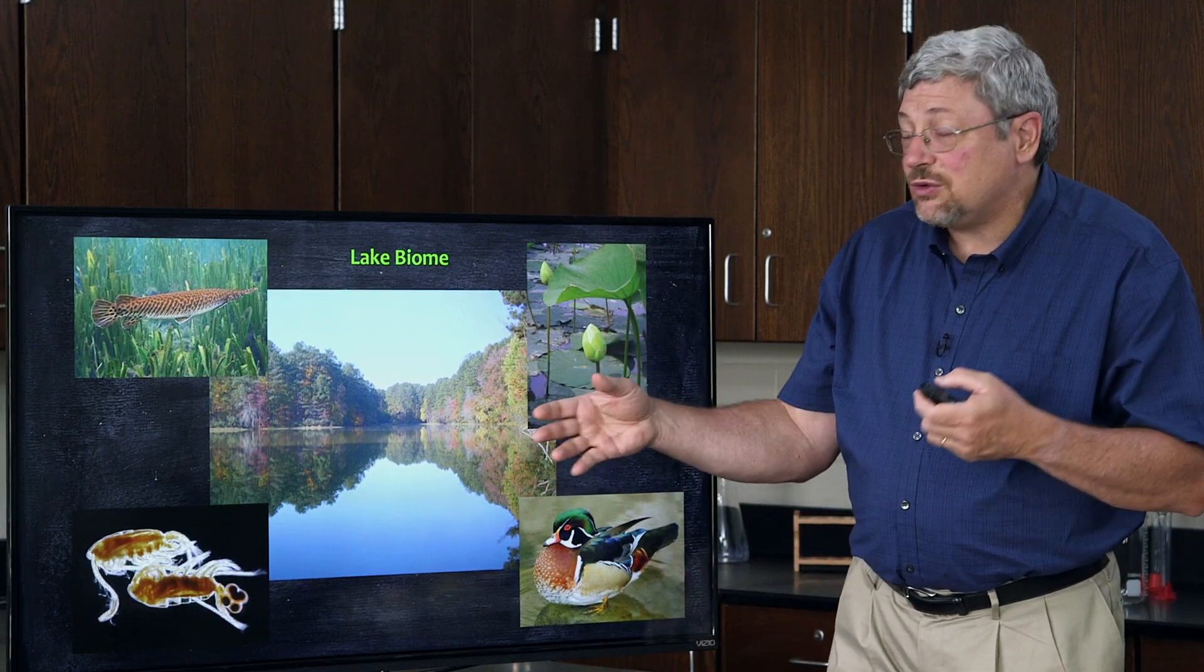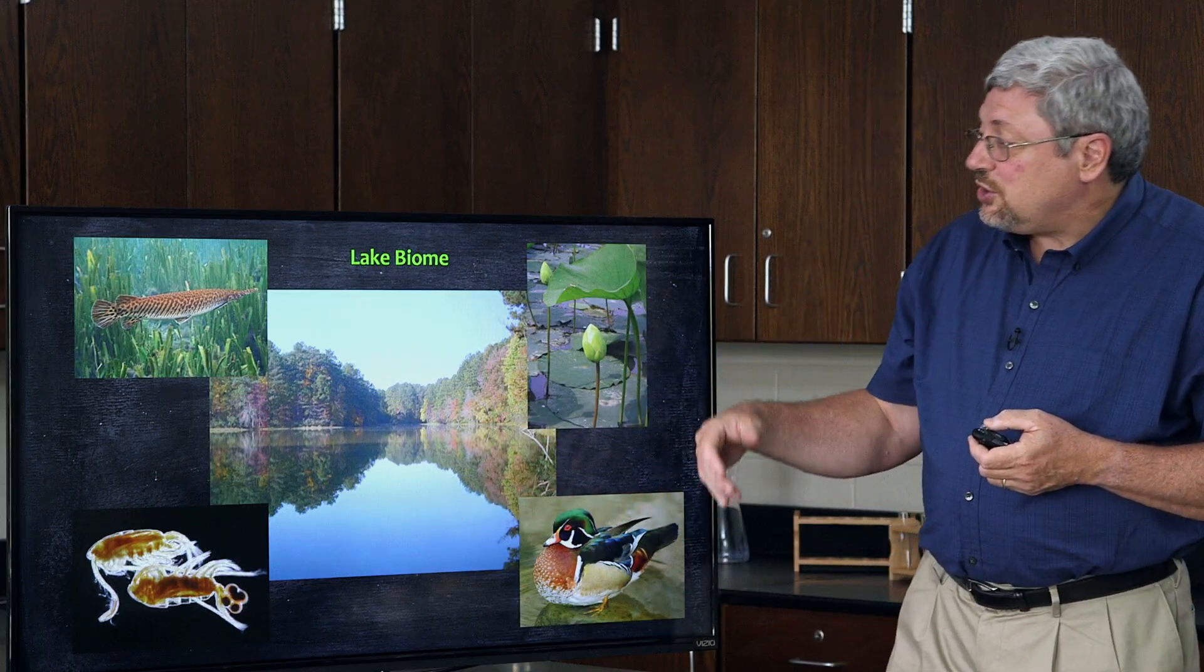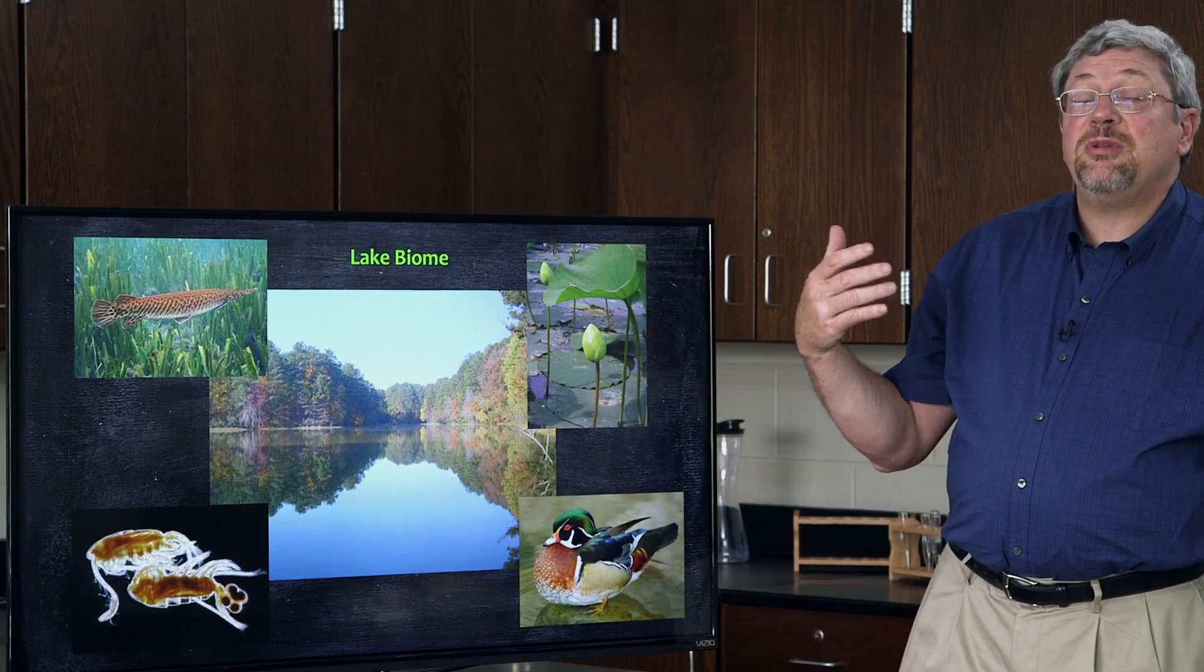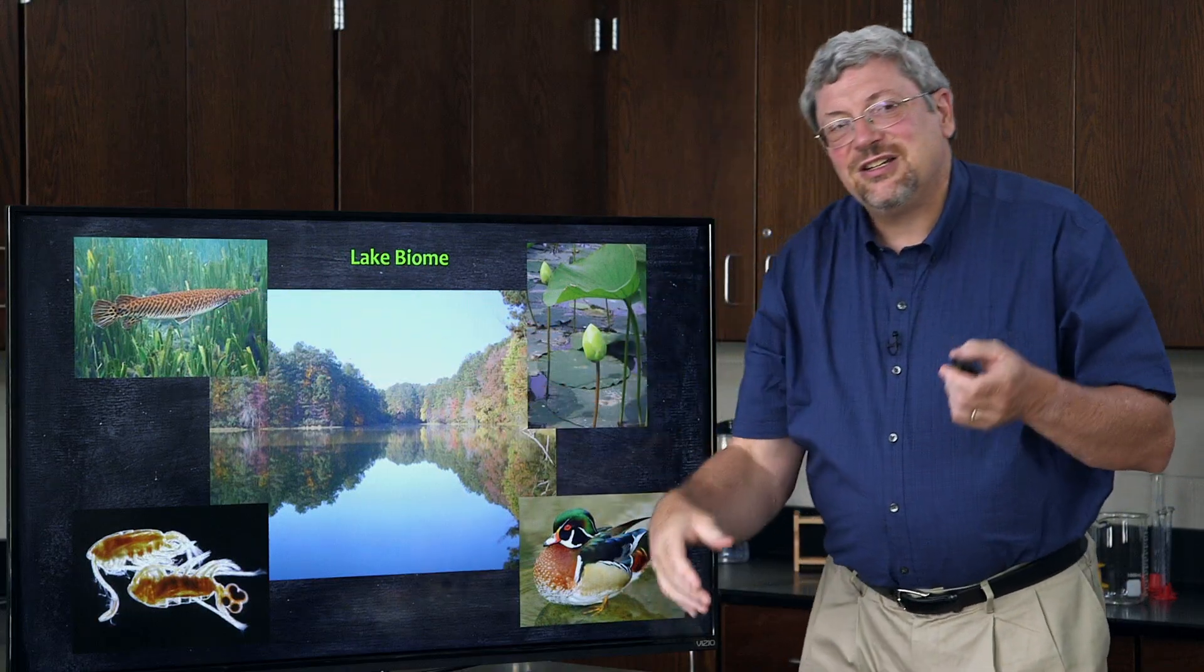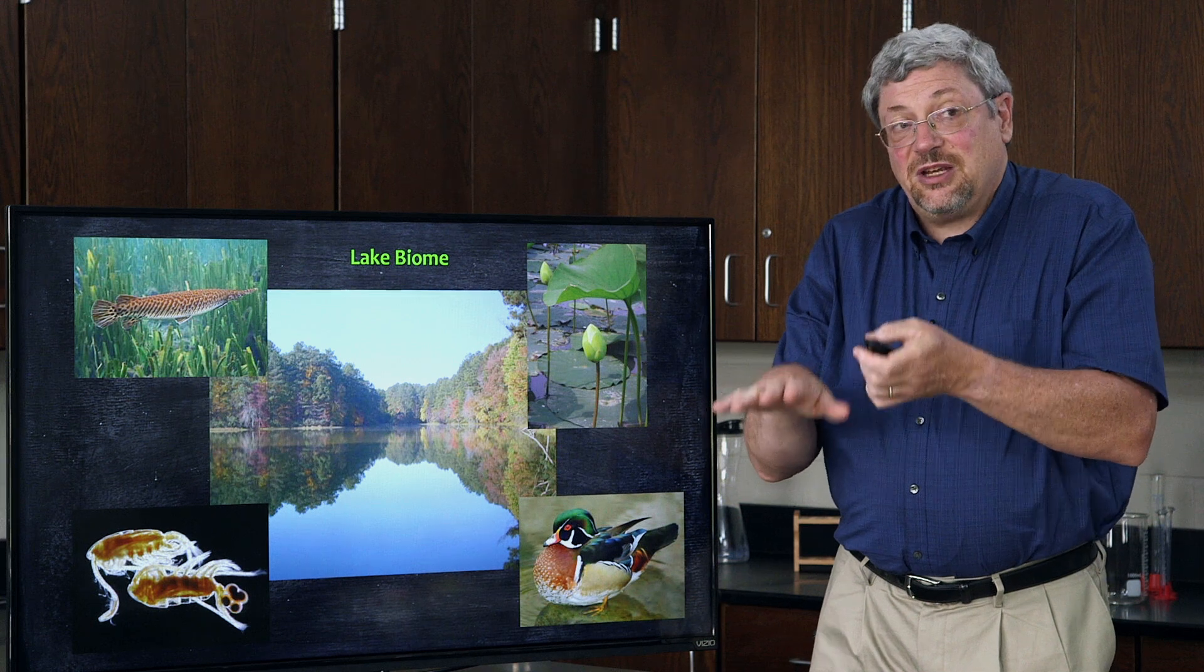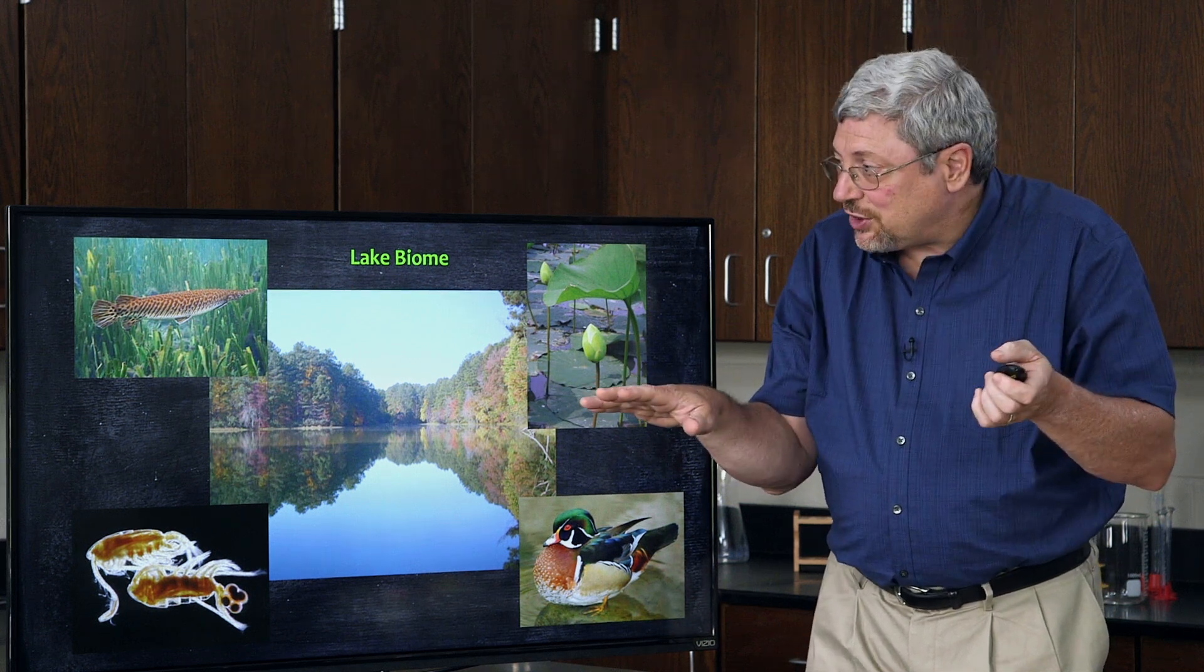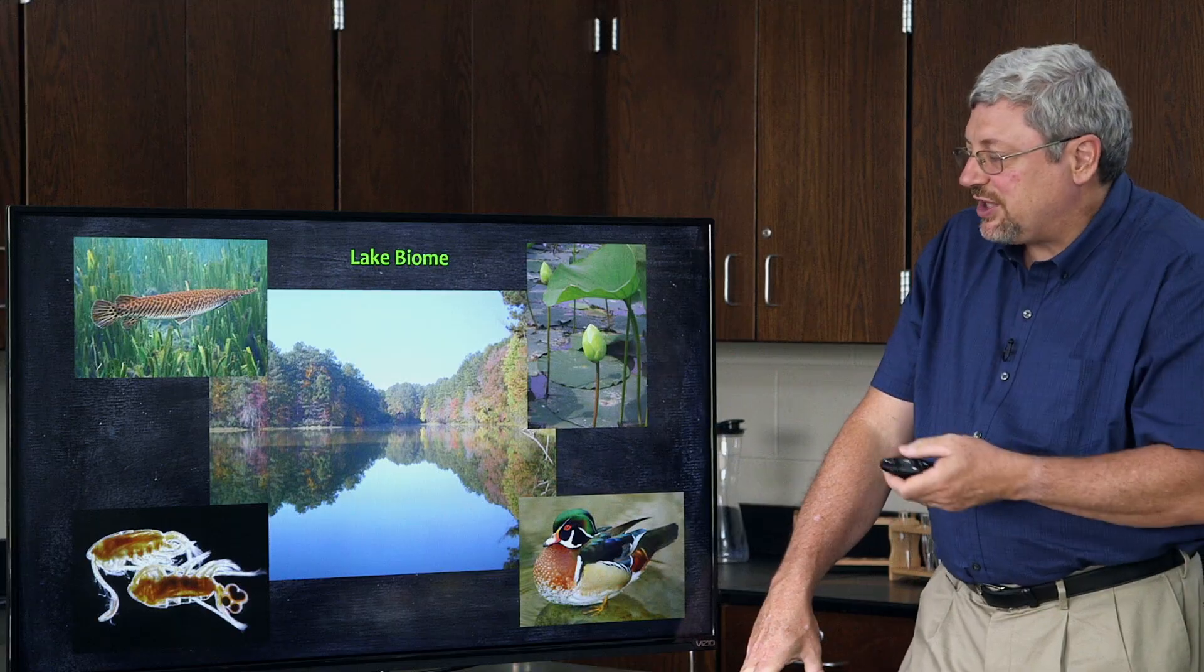Fish and other organisms that don't require quite as much oxygen live in lakes. You don't have to worry about swimming upstream to stay in one position. So you can have fish that can stay in one position just by floating there vertically, like the gar. Special organisms, both plants and animals, are created for the lake biome.